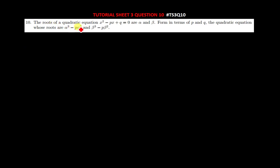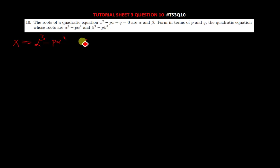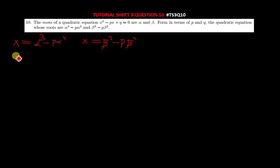Questions 8, 9, and 10 are basically the same. So we know our first root is alpha cubed minus p alpha squared, and our second root is beta cubed minus p beta squared. Basically what you do is bring all these to the other side of the equal sign, so it becomes negative alpha cubed plus p alpha squared equal to zero.